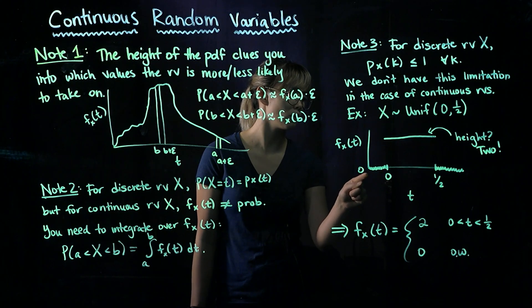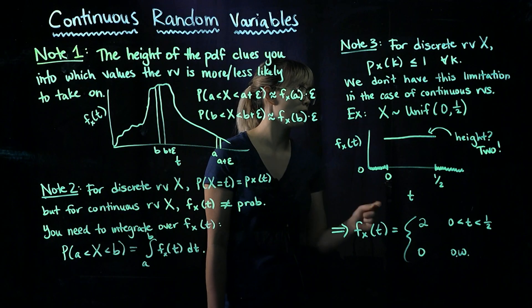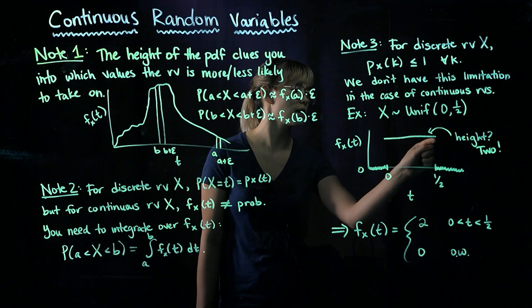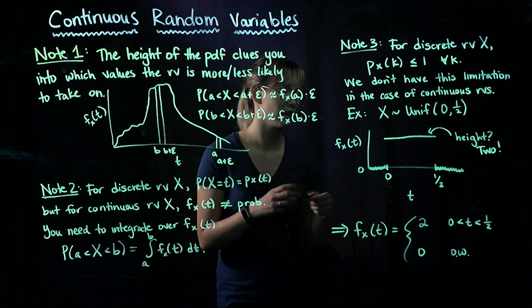So here's our PDF drawn. It's 0 before 0, and it's 0 after 1/2. And then within the interval 0 to 1/2, we have a horizontal line. And to figure out the height of it, we can, again, calculate the area.